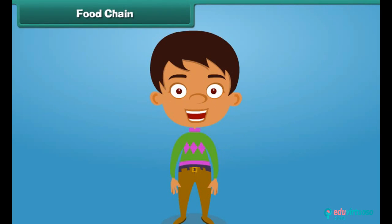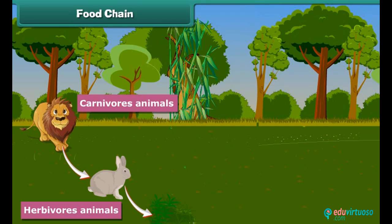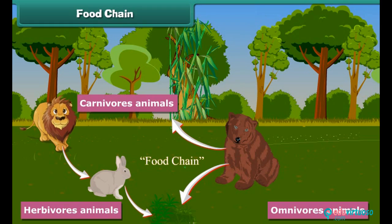Do you know that all animals are connected to each other? They are all dependent on one another for food. Herbivores eat plants to get nutrition, carnivores eat the flesh of herbivores, and omnivores eat both herbivores and carnivores. A food chain is the sequence of who eats whom to obtain nutrition. For example, a rabbit eats grass and a lion eats the rabbit. A bear can eat both.